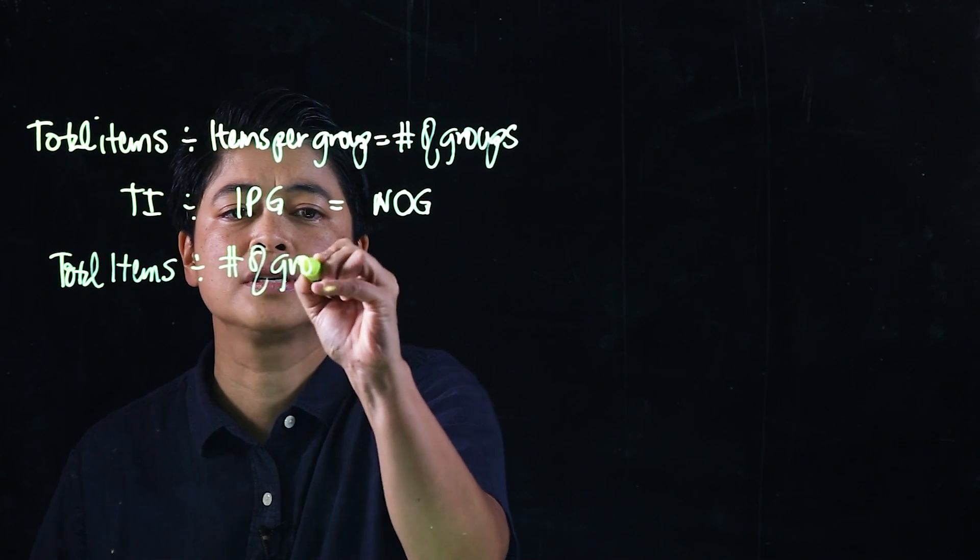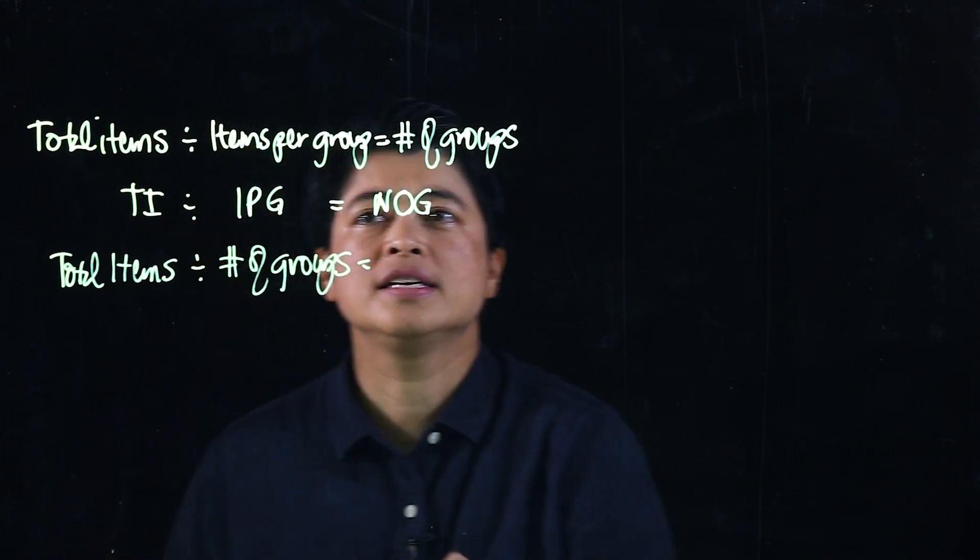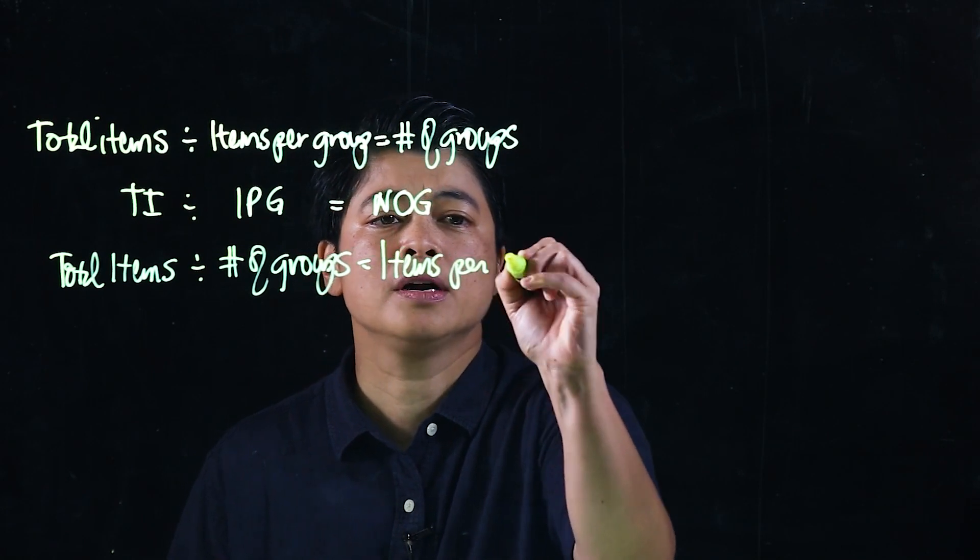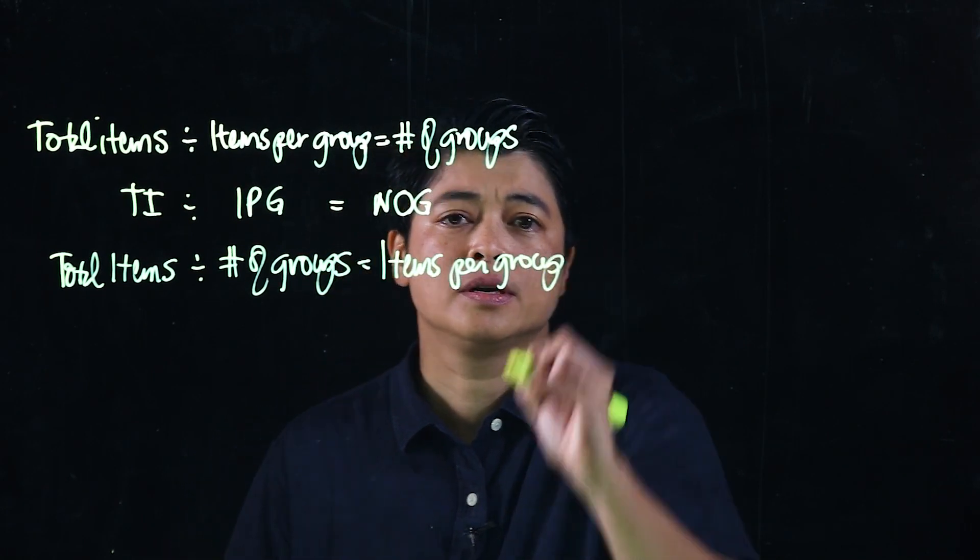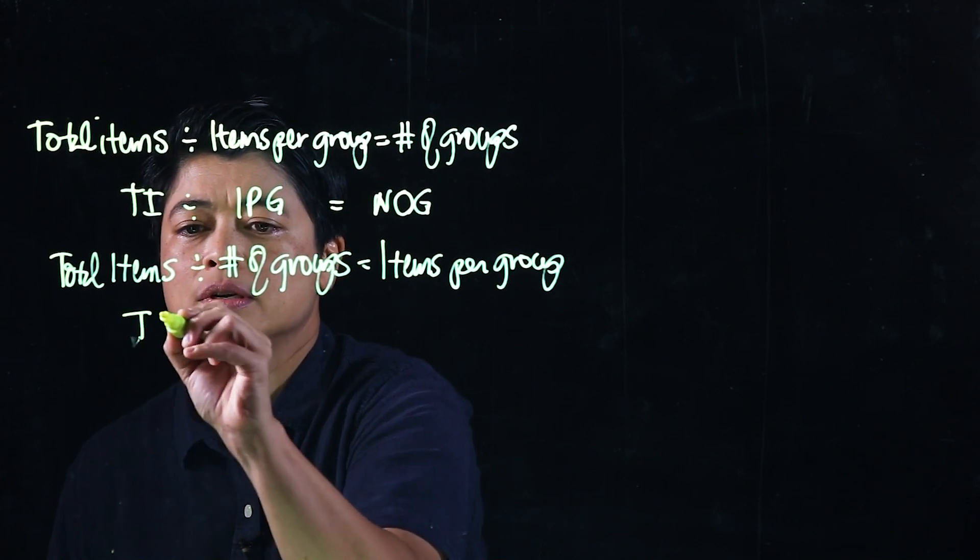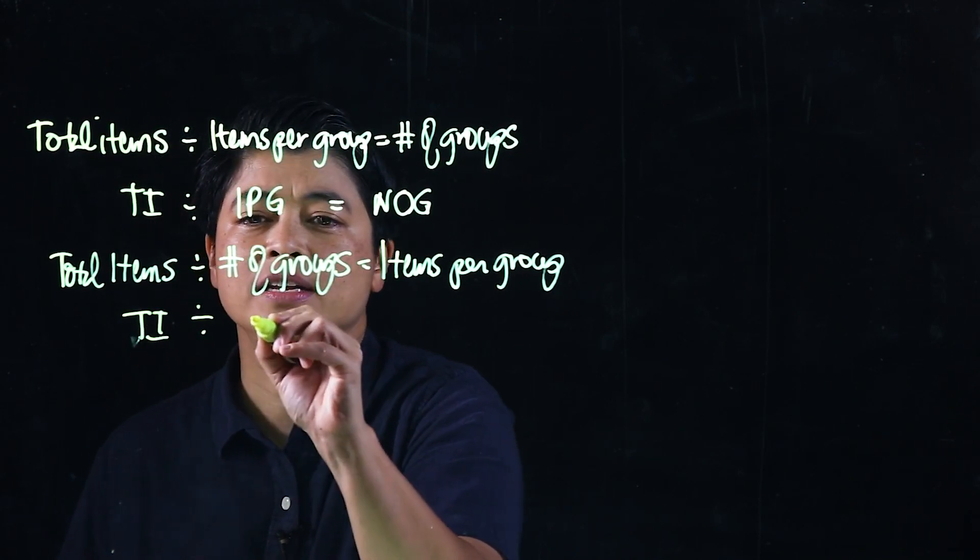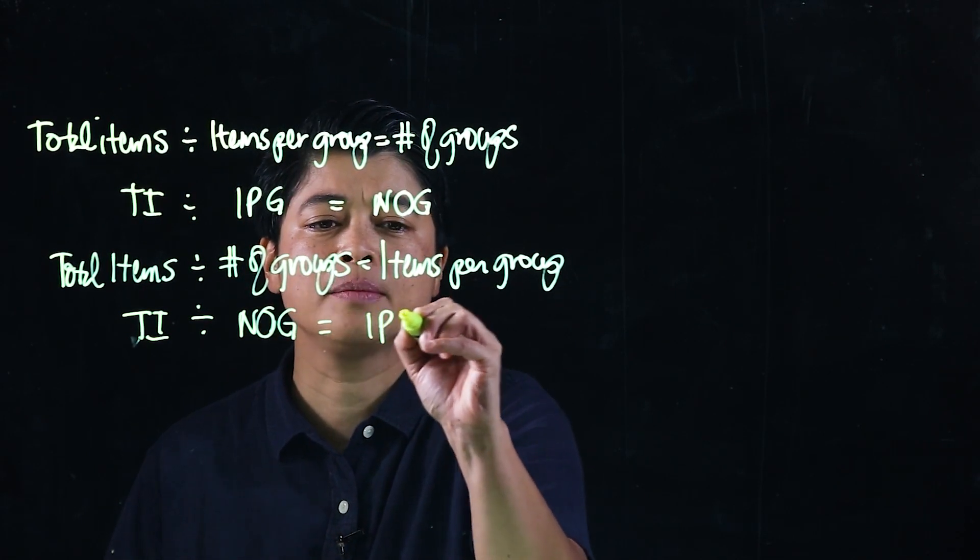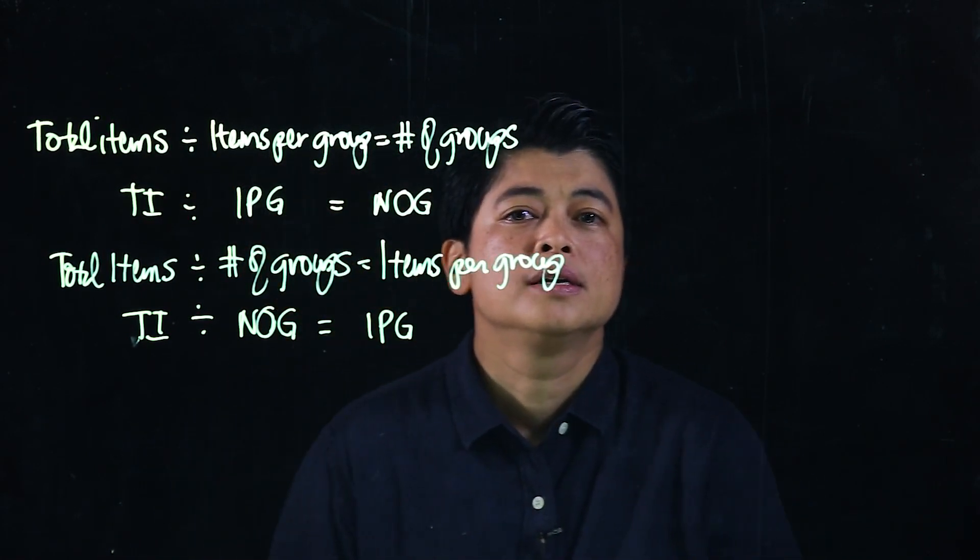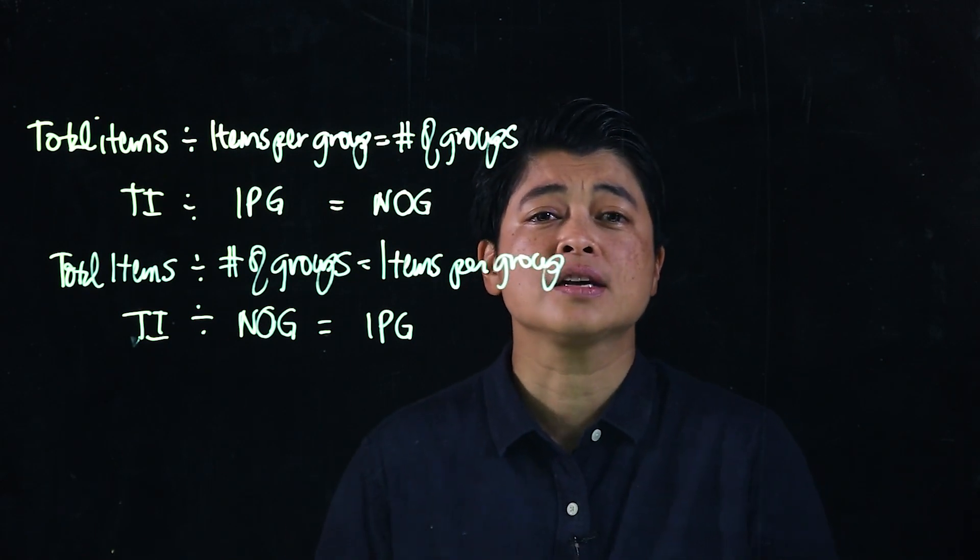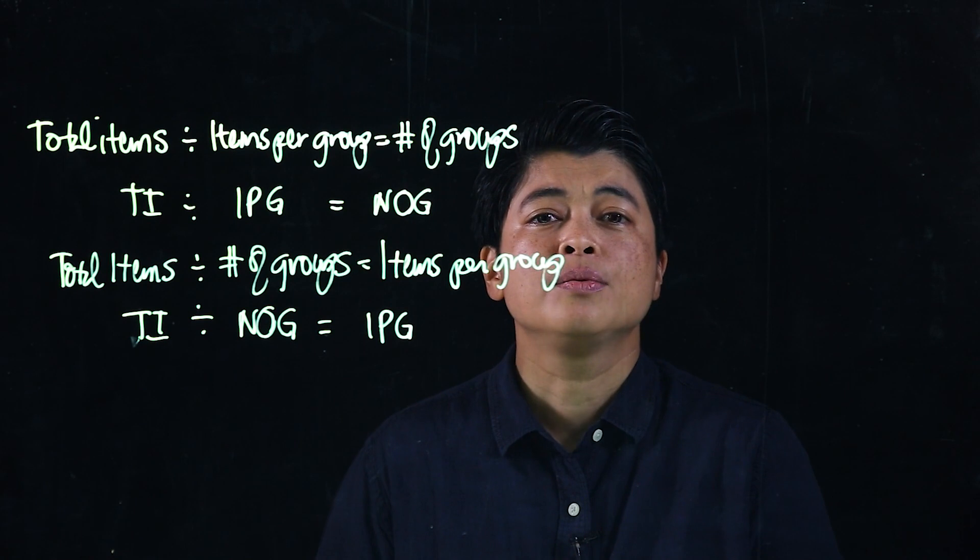Of groups is equal to items per group. So this is total items divided by number of groups equals items per group. With division it's just the reverse of multiplication, which means it's repeated subtraction.